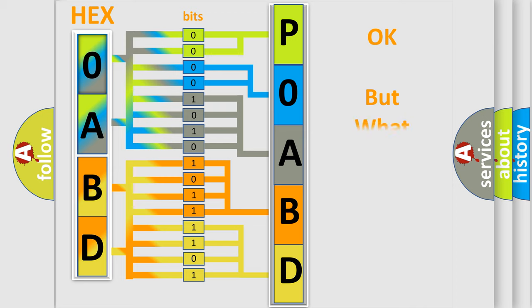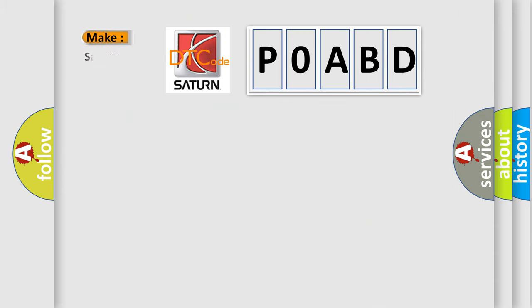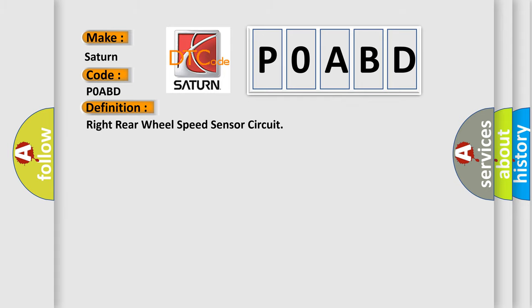The number itself does not make sense to us if we cannot assign information about what it actually expresses. So, what does the Diagnostic Trouble Code P0ABD interpret specifically for Saturn car manufacturers? The basic definition is: Right Rear Wheel Speed Sensor Circuit. Here is a short description of this DTC code.